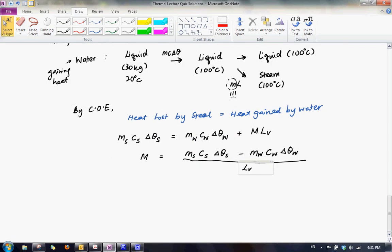With that, you can now substitute in your values. And we will have 100 kg, the specific heat capacity is 500 joules per kg per Kelvin, multiply by 700 minus 100, subtract 30, 4200 times 100 minus 20.